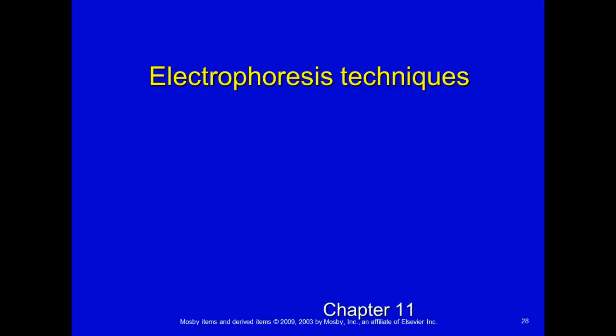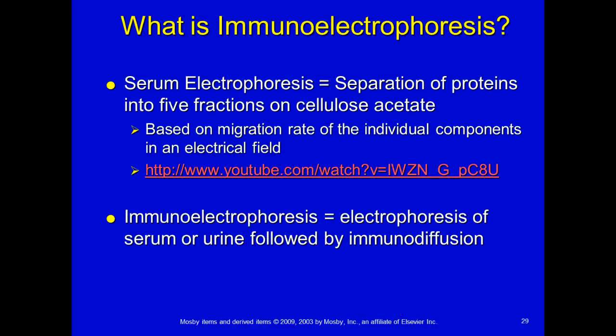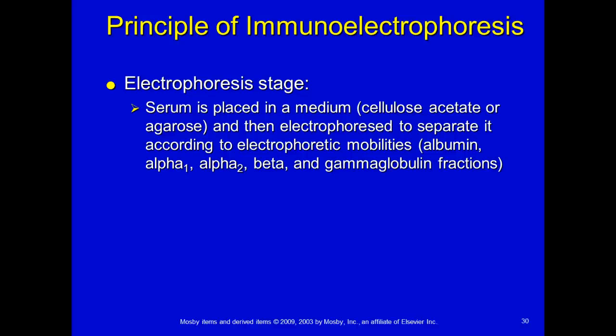Now let's talk about electrophoresis techniques. You had an introduction to this in chemistry, but now we're covering immuno-electrophoresis. We separate proteins by electrophoresis into albumins and globulins. If there's an increase in globulins, the physician wants to know which one — IgM, IgG, IgA, IgD — so we separate them into five fractions on cellulose acetate. Immuno-electrophoresis is the electrophoresis of serum followed by immunodiffusion. We place the serum on a medium — usually cellulose acetate or agarose — and electrophorese to separate according to electrophoretic mobilities: albumin first, then alpha-1, alpha-2, beta, gamma globulin. Gamma globulin is what we focus on for immuno-electrophoresis.